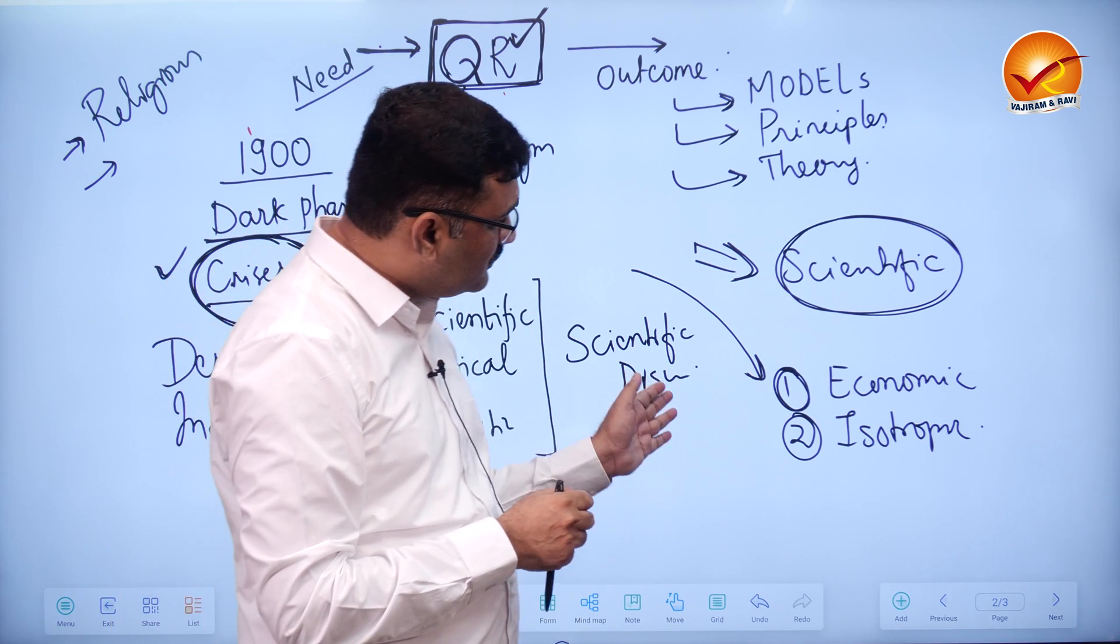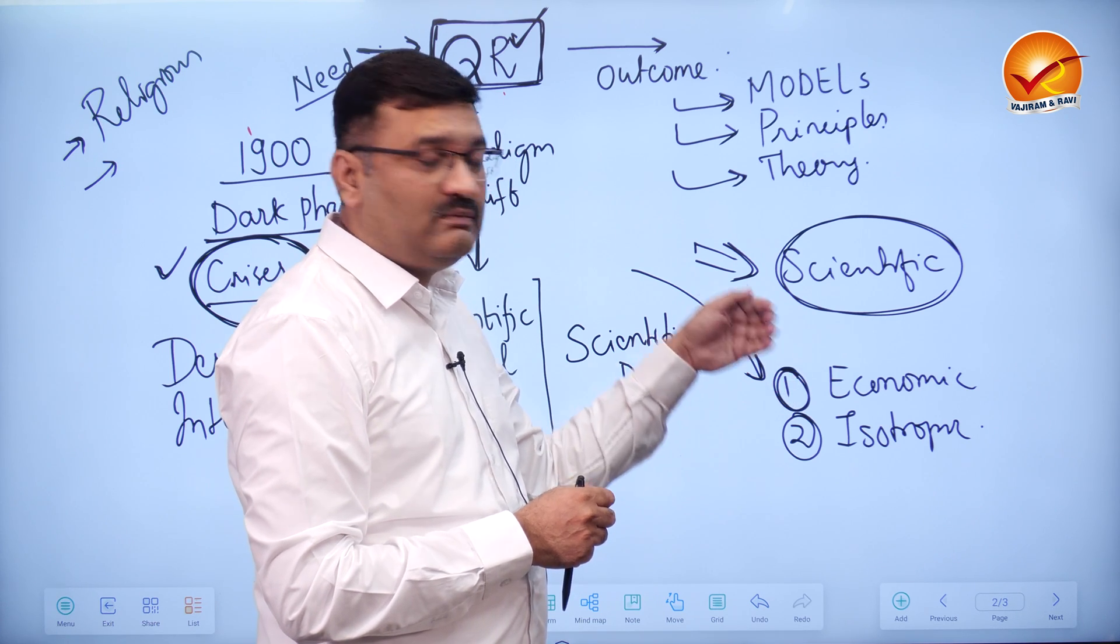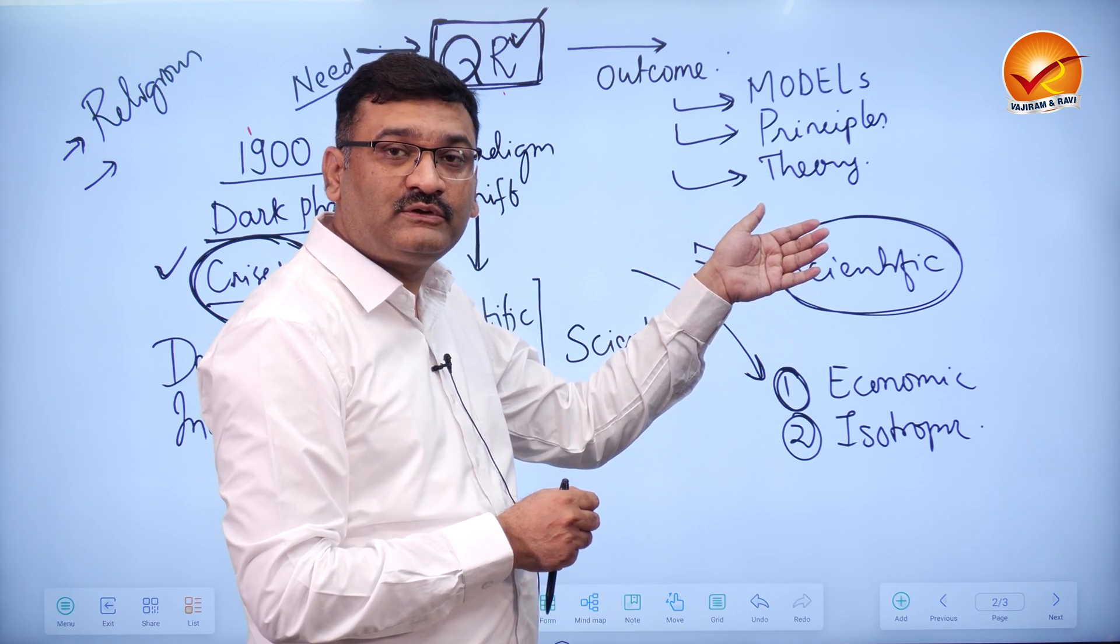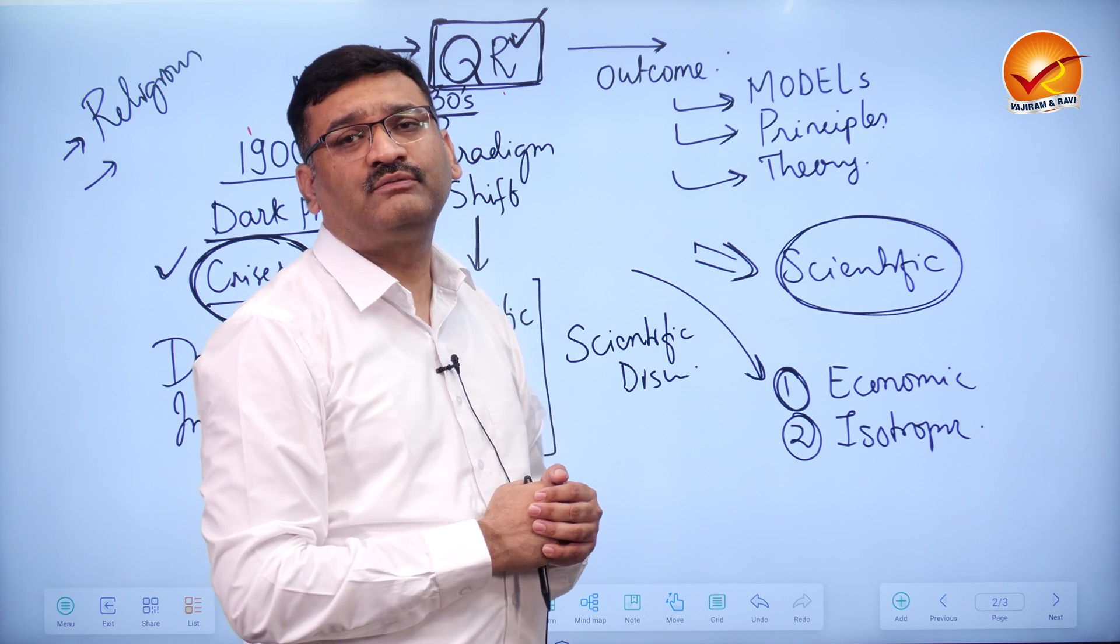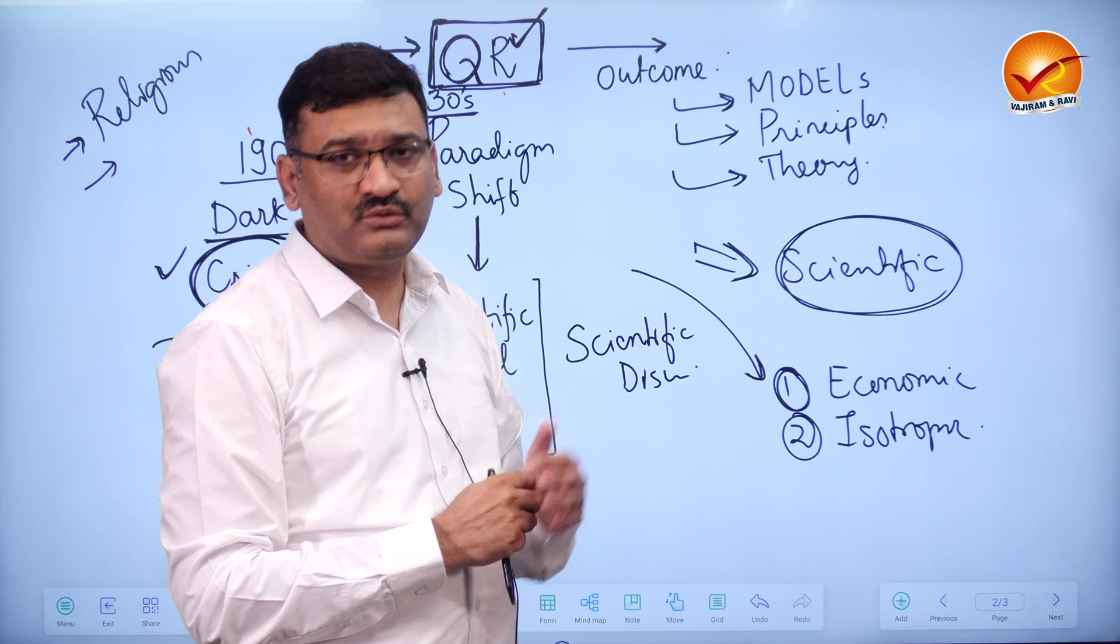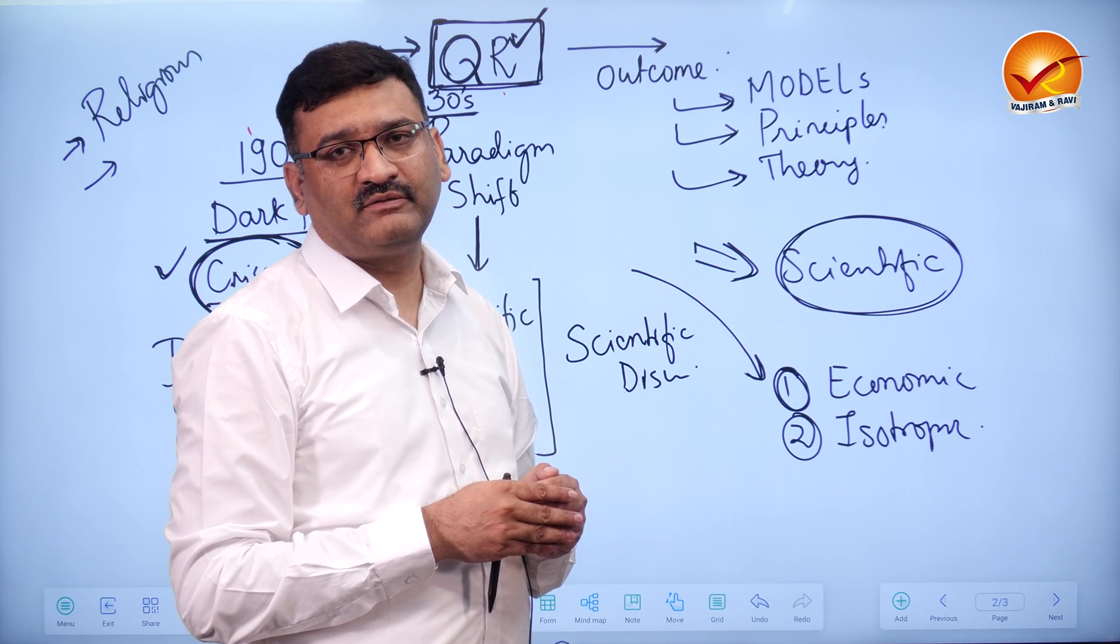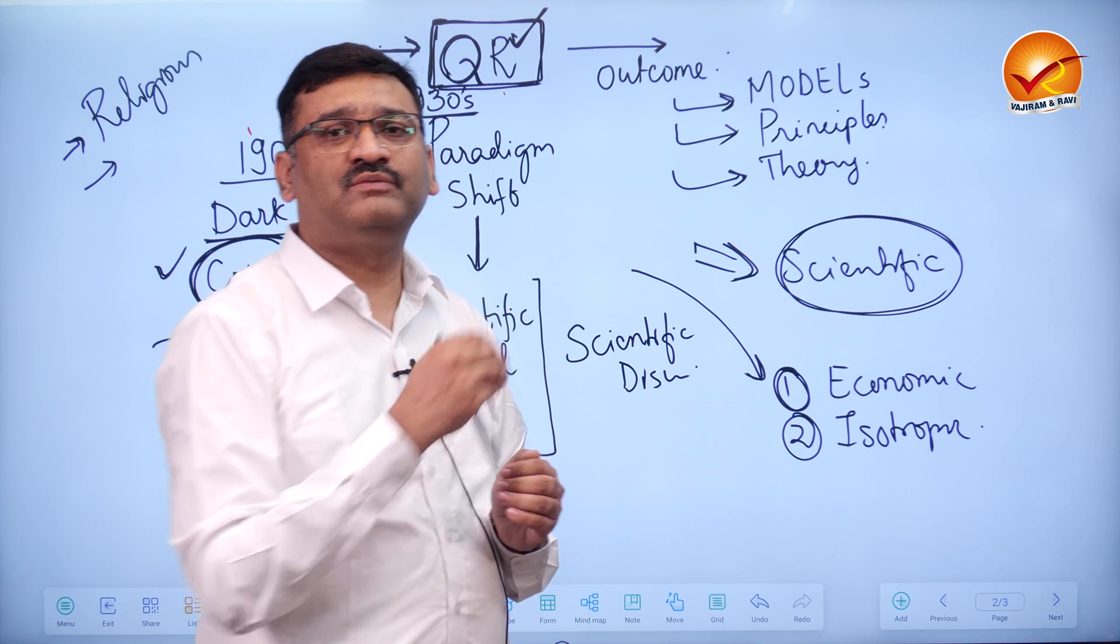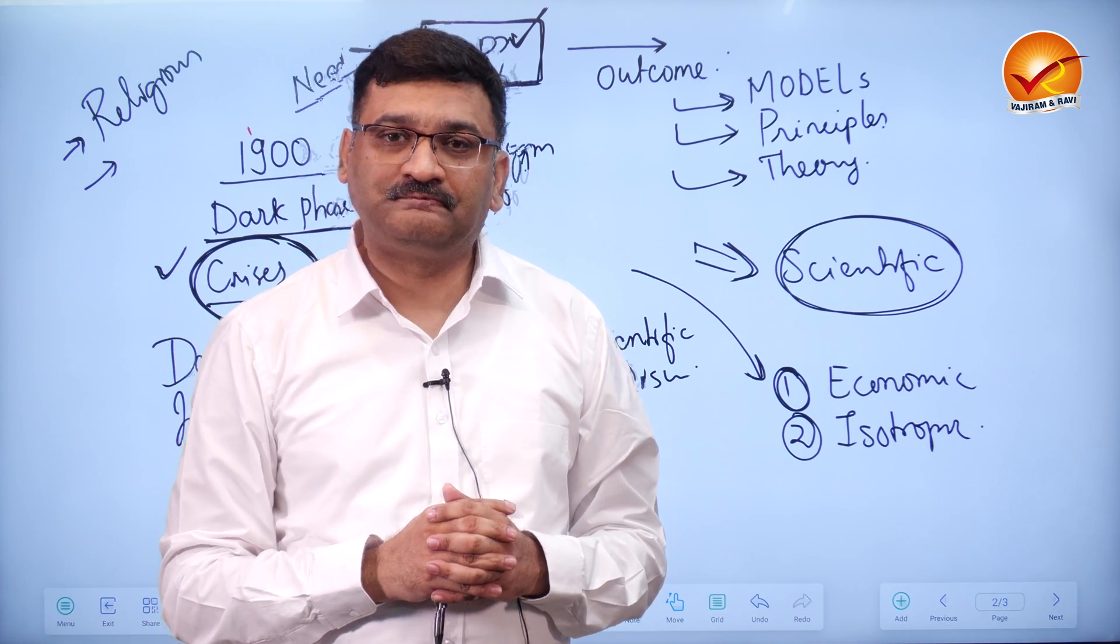We see how it has dominated geographical thought. But by 1970s, we find that the influence of quantitative revolution has considerably declined. There are certain reasons for this decline, which we analyze with the concept of critical revolution. Thank you.